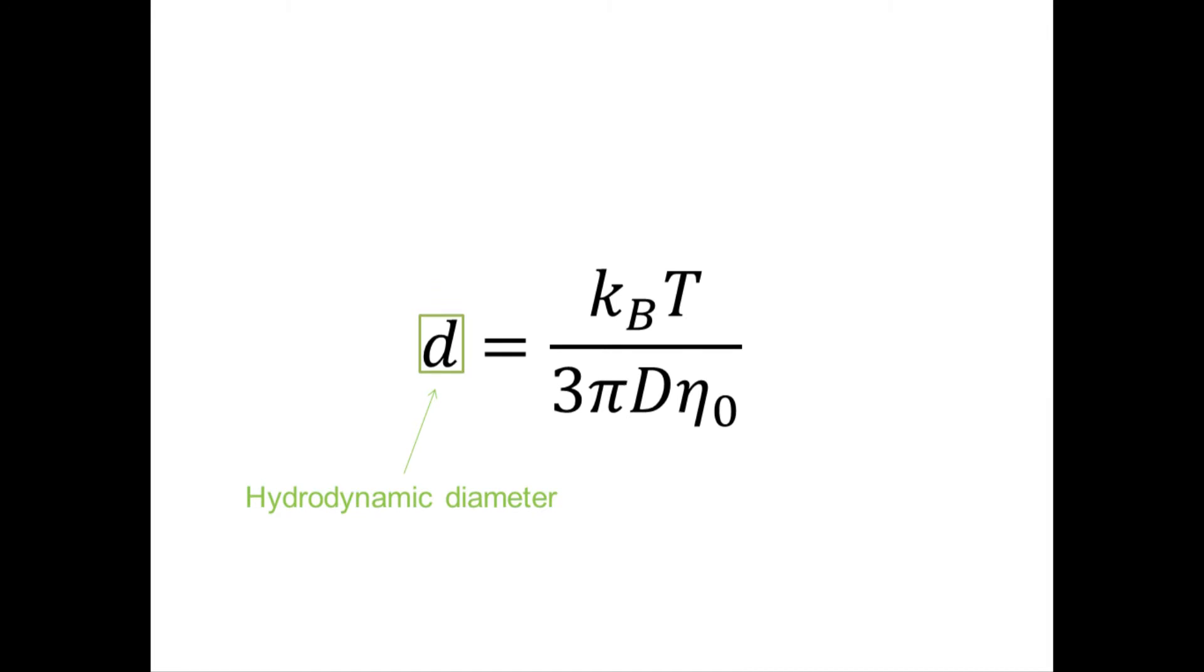The parts of the equation are the diffusion coefficient, the Boltzmann's constant, the absolute temperature, and the viscosity, while d describes a hydrodynamic diameter.